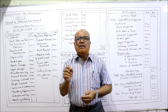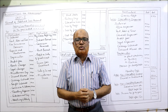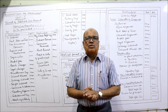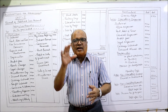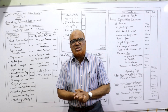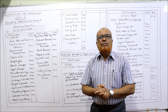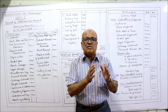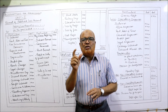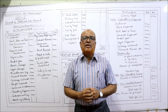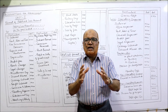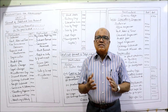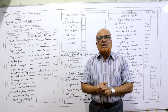The trading account is prepared to find out the net result of buying and selling of goods — whether the business has earned gross profit or incurred a gross loss. The format was already given in the last video. In this video I am going to explain the format of the profit and loss account. The purpose of the profit and loss account is to find out the net profit or net loss earned or incurred during a particular accounting year.